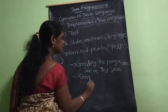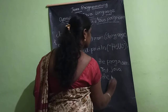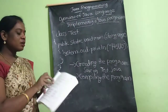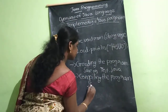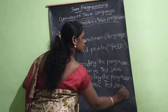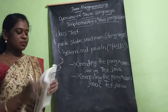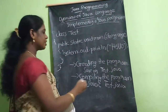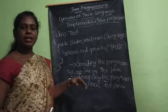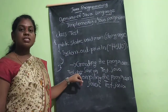Next step is compiling the program. To compile, you use the command 'javac' — type 'javac Test.java'. It will create a dot-class file. For example, Test.class — one dot-class file is created. The compiler converts your code to byte code.